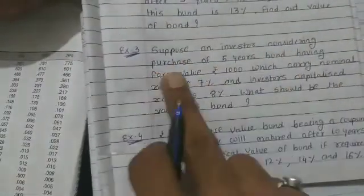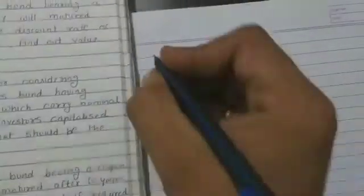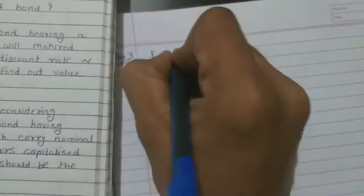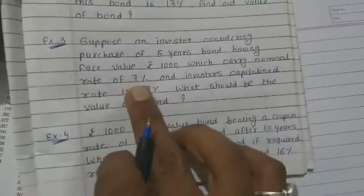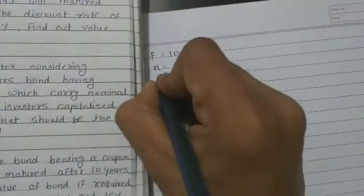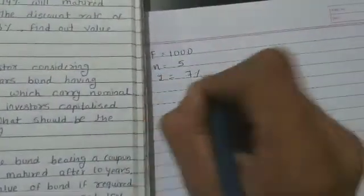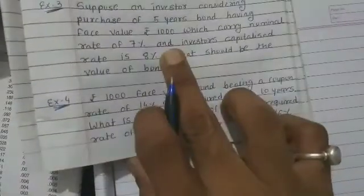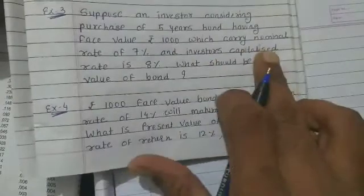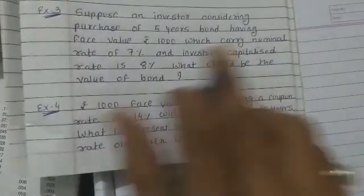An investor is considering purchasing a 5-year bond having the face value of 1000, so face value F = 1000, number of years n = 5, which carries a nominal rate of 7 percent. Nominal is nothing but the interest rate, so interest i = 7 percent. 7 percent of 1000 gives us 70 rupees interest. The investor's capitalized rate is 8 percent, so Kd = 8 percent.